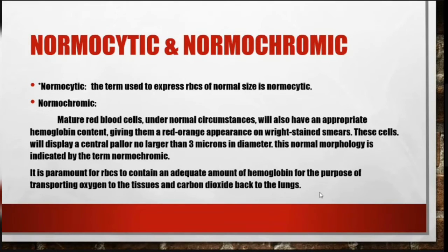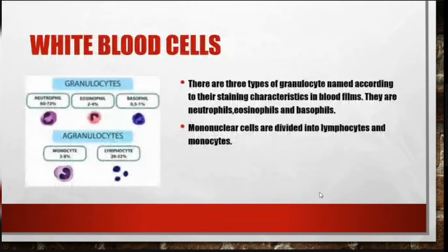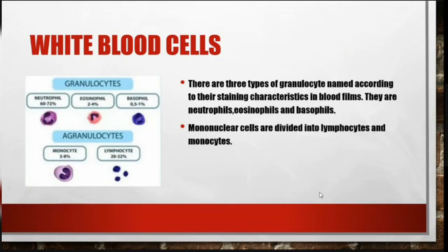CO2 is transported back to the lungs. White blood cells: there are three types of granulocytes, namely neutrophils, eosinophils, and basophils. Mononuclear cells are divided into lymphocytes and monocytes.